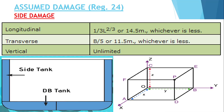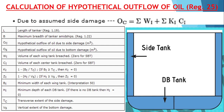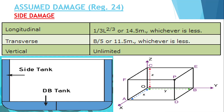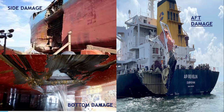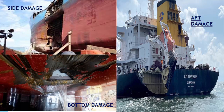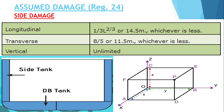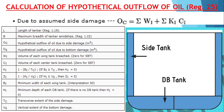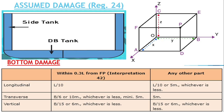Regulation 24 talks about the assumed damage and Regulation 25 talks about the hypothetical outflow of oil. These two topics are going to be interesting because these questions are asked in naval class examinations. After watching this video, you will have a clear concept of what assumed damage means, what hypothetical oil flow means, and what formula it indicates.